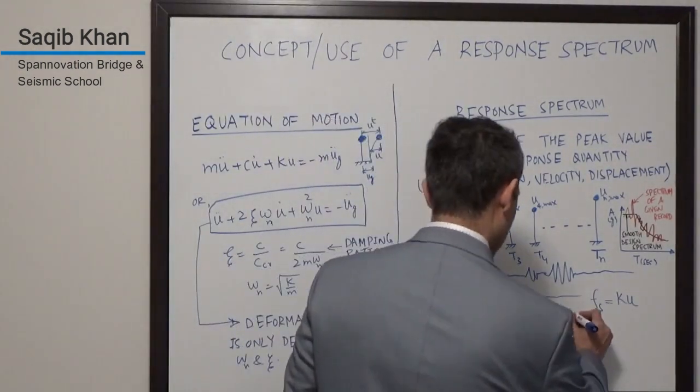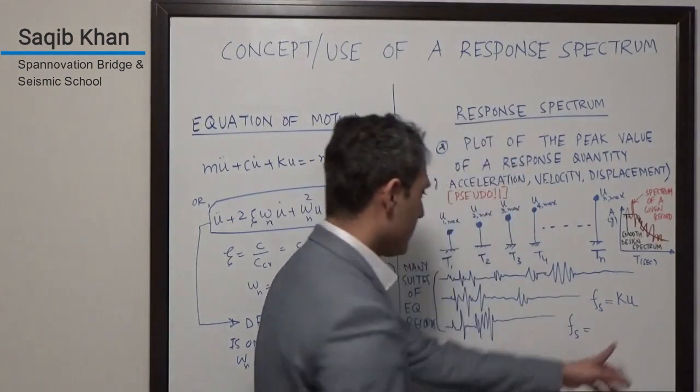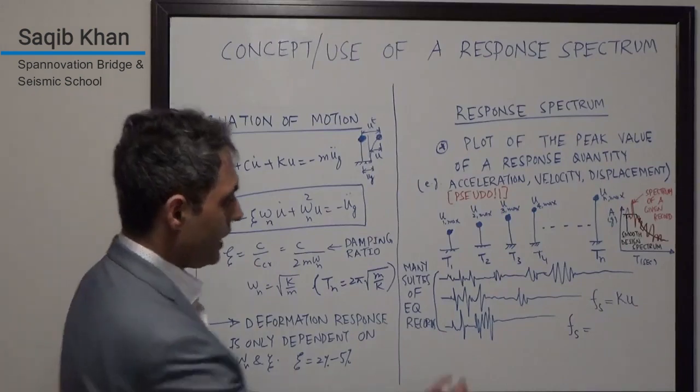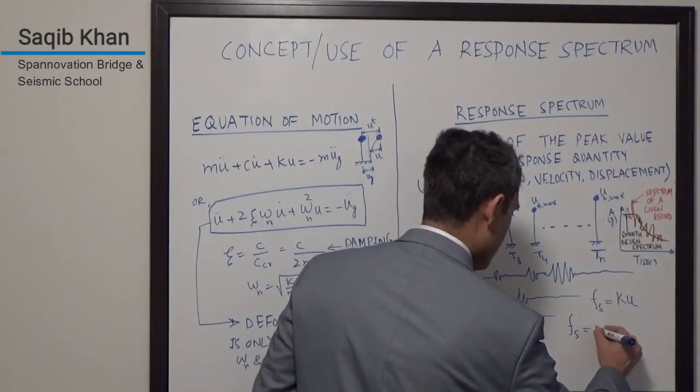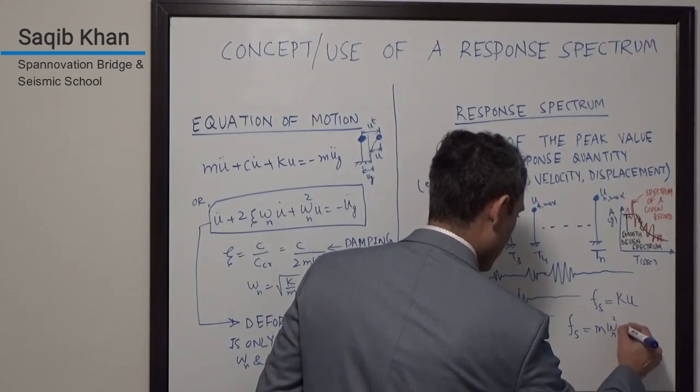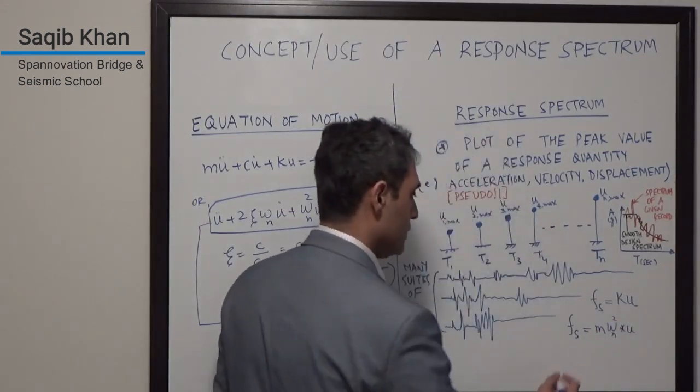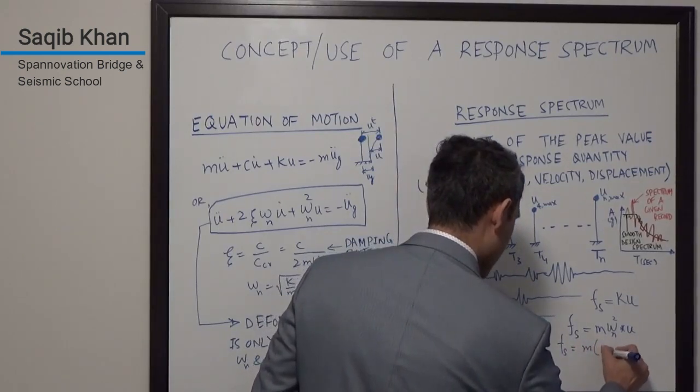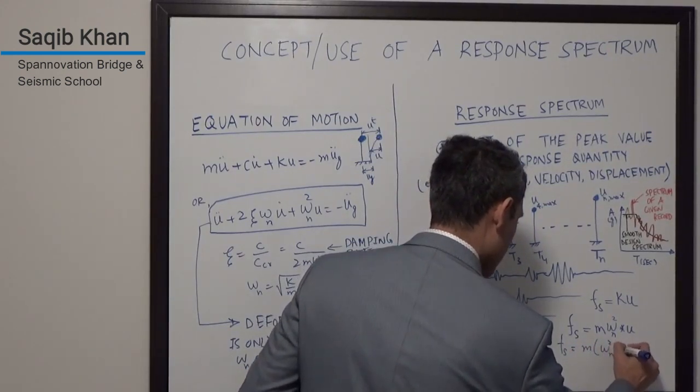From here, I see that K is given by omega N squared M. So I can replace K by M omega N squared, and then I have to multiply that by U. I could write this as M times omega N squared times U.